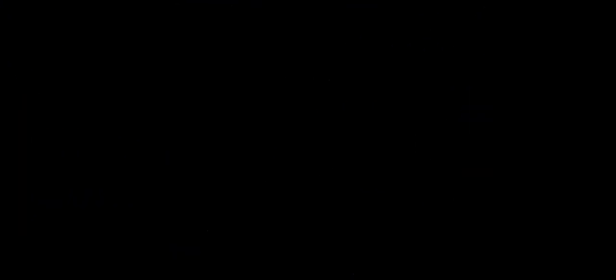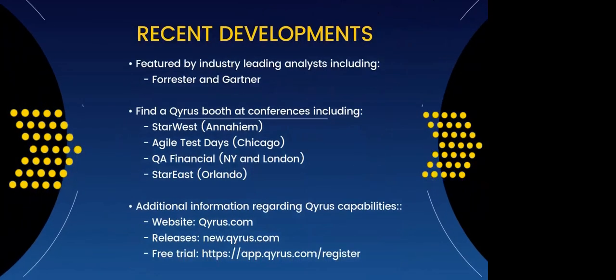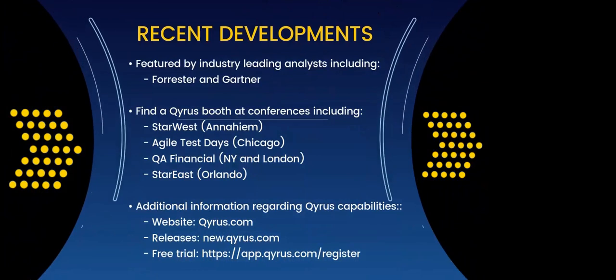Before we jump into the demo, I did want to list a few of Kairos' recent highlights. The first is being included by both Forrester and Gartner as a top-tier automation testing solution within the market. Next, be on the lookout for our booths at industry events, including conferences. And lastly, if you want to learn more about Kairos, there are a few links provided — including new.kairos.com for new releases, docs.kairos.com for detailed documentation of all testing solutions and offerings, as well as the Kairos website for resources including Feature Fridays and other content. Without further ado, let's dive into the demo.